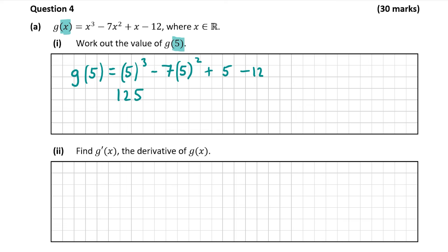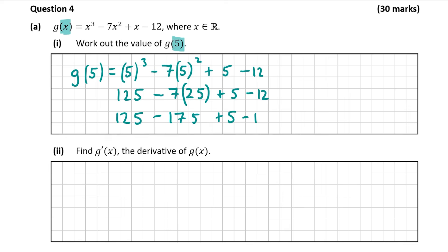Then we have minus 7 times 5 squared. Doing 5 squared first gives 25, so we have minus 7 times 25, plus 5 minus 12. Minus 7 multiplied by 25 is minus 175. So 125 minus 175 plus 5 minus 12 equals minus 57. That's your answer for part A1: minus 57.